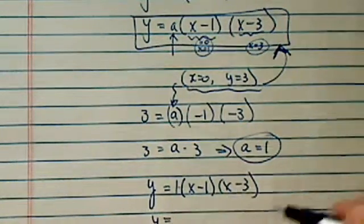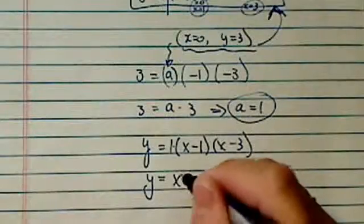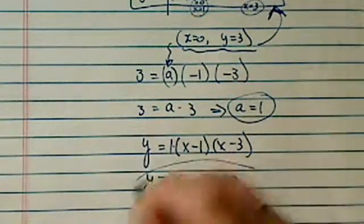Or if you FOIL it out or expand it out, you have x squared minus 4x plus 3. That's all.